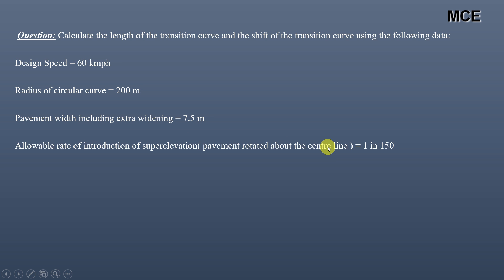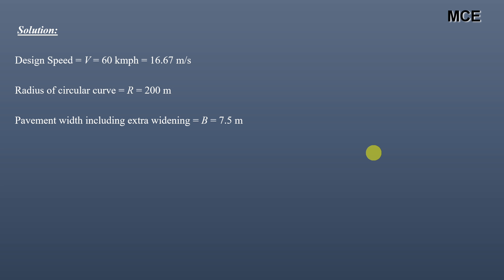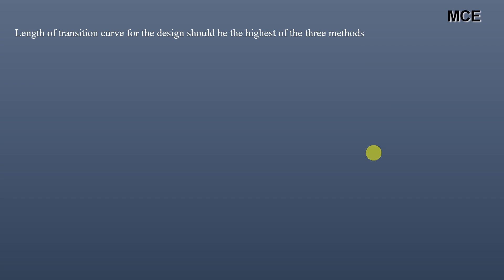Given information: design speed V = 60 km/h or 16.67 m/s, radius of circular curve R = 200 m, pavement width including extra widening B = 7.5 m, and rate of introduction of super elevation denoted by N is 1 in 150.